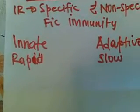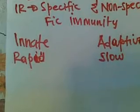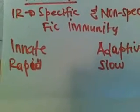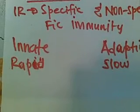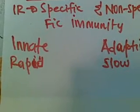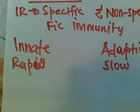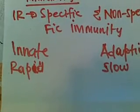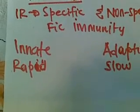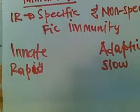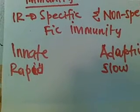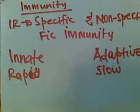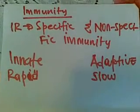For defenses, innate uses barriers such as skin and mucous membranes, phagocytes, inflammation, and fever. Adaptive immunity uses cell killing — it takes in an antigen by antibody for removal. That's how these two differ.